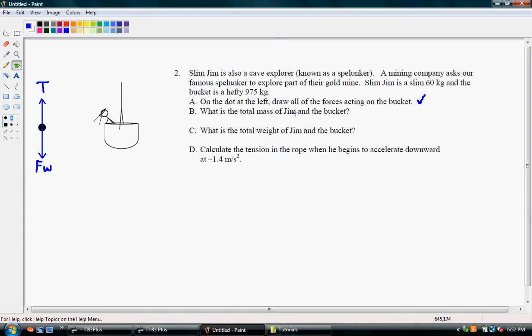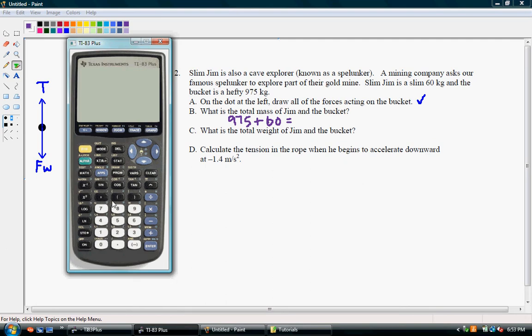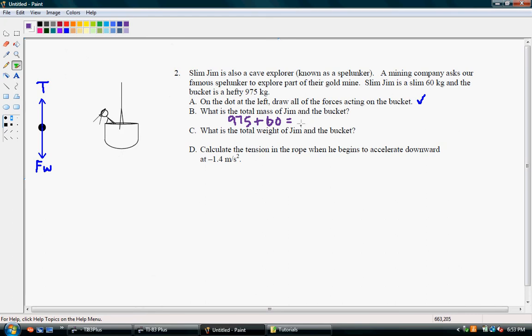What is the total mass of Jim and the bucket? Alright, this is pretty easy. The mass of the bucket is 975 kilograms, and Jim's mass is 60 kilograms. So when we add these together, 975 plus 60, we get 1,035 kilograms. That is the total mass.